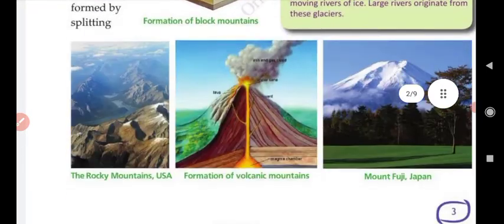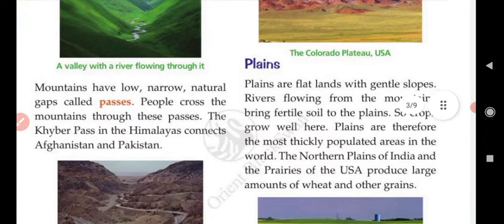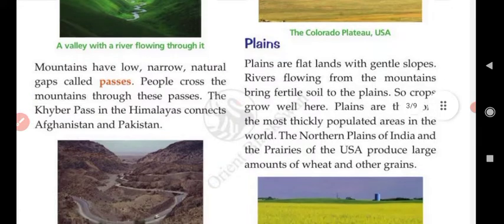We will discuss the remaining landforms, starting with plains. Plains are flat land with a gentle slope. Rivers flow from the mountains and bring fertile soil to the plains. You can see that the surface is very flat — it is neither high nor low. There are many rivers coming from the mountains, which lead to fertile soil in the plains.